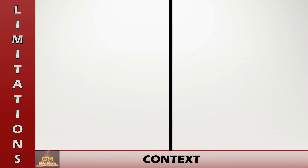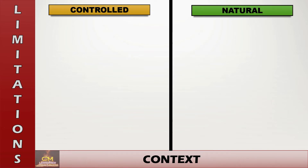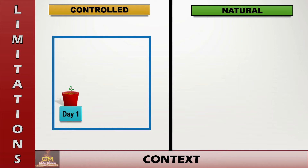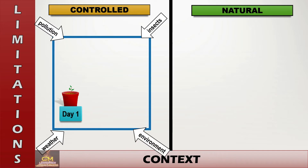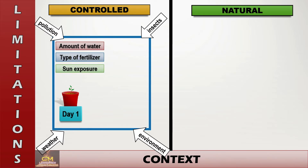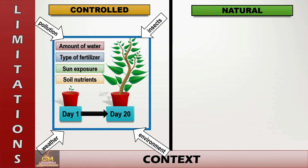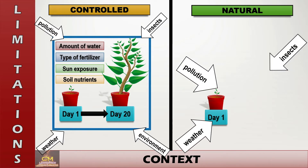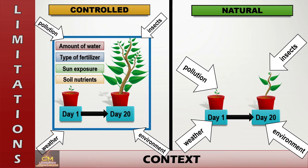Going back to the fertilizer experiment example: in a controlled environment, a researcher controls everything. External factors such as insects, pollution, weather, and environment are limited so as not to hinder or affect plant growth. Other variables such as amount of water, type of fertilizer used, sun exposure, and soil nutrients are moderated as they influence how the plant will grow. Whereas in a natural setting, because the plant is already exposed to external factors, the results might not be the same.